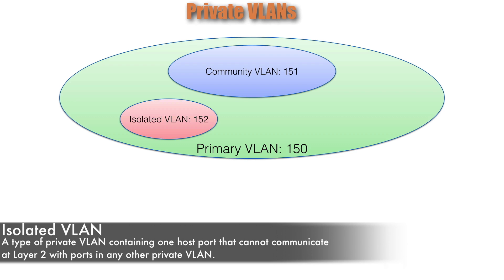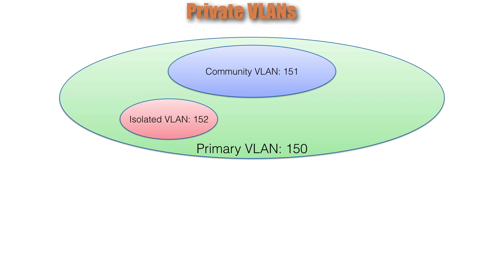Here's an important point. All of the ports set up to belong to one of these Private VLANs also belong to the Primary VLAN. But belonging to the Primary VLAN does not mean they can share information with one another. We set up something called a Promiscuous Port, which is able to communicate into each of these Private VLANs — that might be the port connecting to a router to get us out to the rest of the world. We could have another isolated VLAN, VLAN 153, for yet another single-office company. These three Private VLANs are all part of the same Primary VLAN.